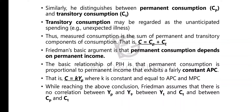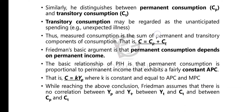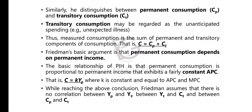Your permanent consumption is dependent on permanent income. Transitory consumption is never dependent on transitory income — that is important to remember. Only permanent consumption depends on permanent income.